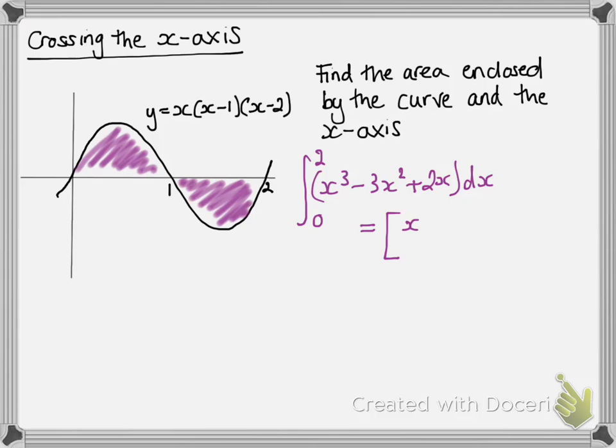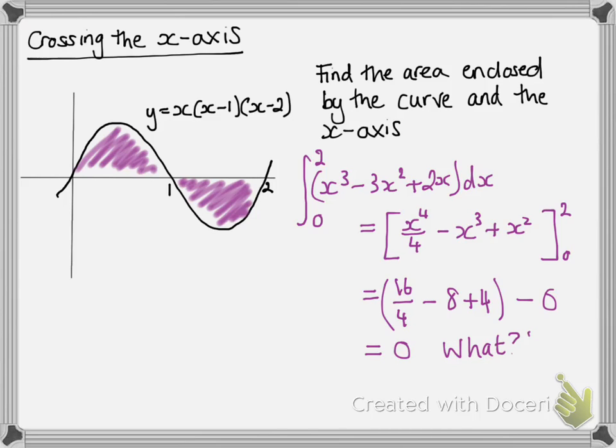substitute in our limits. Now, if we work out what that comes to, we get a 0, which is clearly wrong. If we just have a look at that, we can't have a 0 area. Something has gone wrong here.